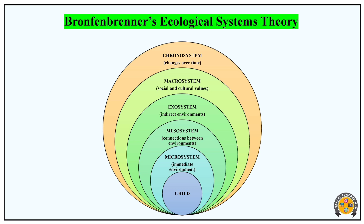Third is the Exo System — it covers all indirect environments. And fourth is the Macro System, which includes social and cultural values. The last is the Chrono System, which covers changes over time. So the five systems are: micro, meso, exo, macro, and chrono.